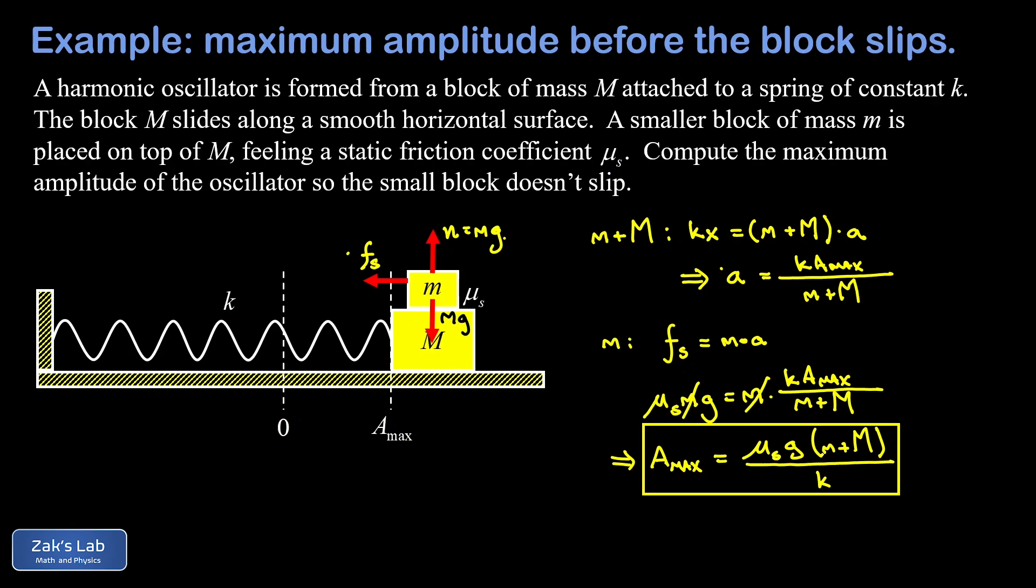One way to do that is to look at the units here, so an amplitude should have units of meters. On the right hand side the coefficient of static friction is unitless, but we have then a term with acceleration that's g which we measure in meters per second squared, we have a term with mass that's measured in kilograms, and then in our denominator we have a spring constant which is measured in newtons per meter.